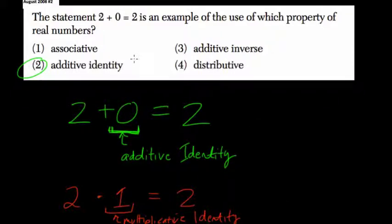The associative property would be an example. Let's see, you have 2 plus negative 1 plus 1. Well, that's 2 plus 0, right?